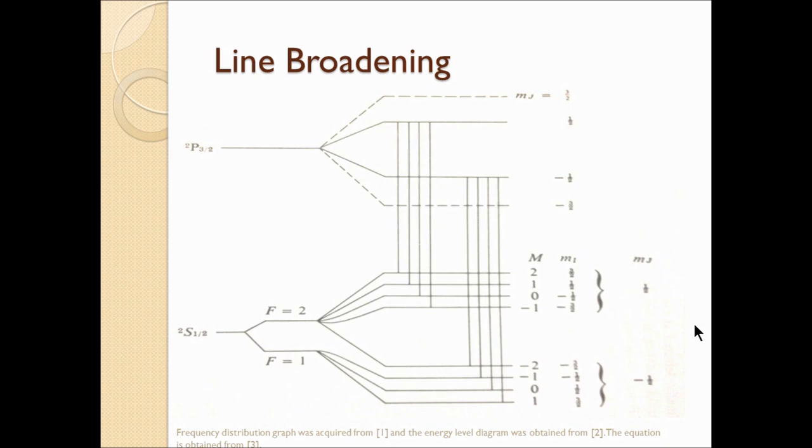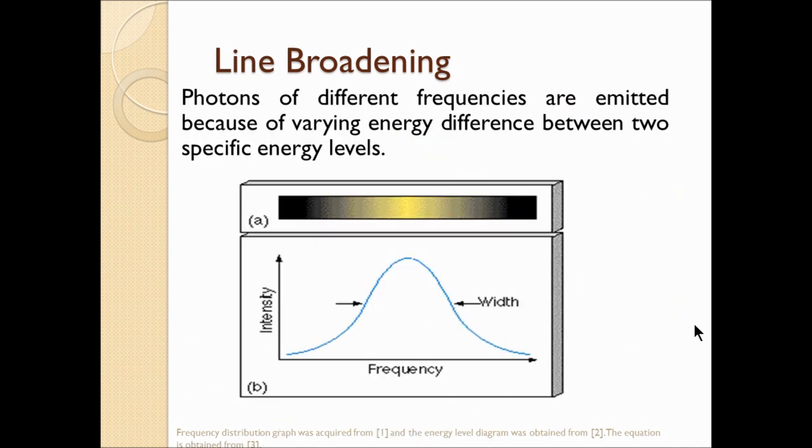This means that photons of different energies can be absorbed between two specific energy levels and in the same way different photon energies can also be emitted via de-excitation. And this is why we have this third graph. Here the range of photon frequencies that can be absorbed by the atom to induce a transition is displayed using a line-shaped function. And this gives the probability density of those photons. The area under this curve is given by this equation, which is equal to 1.